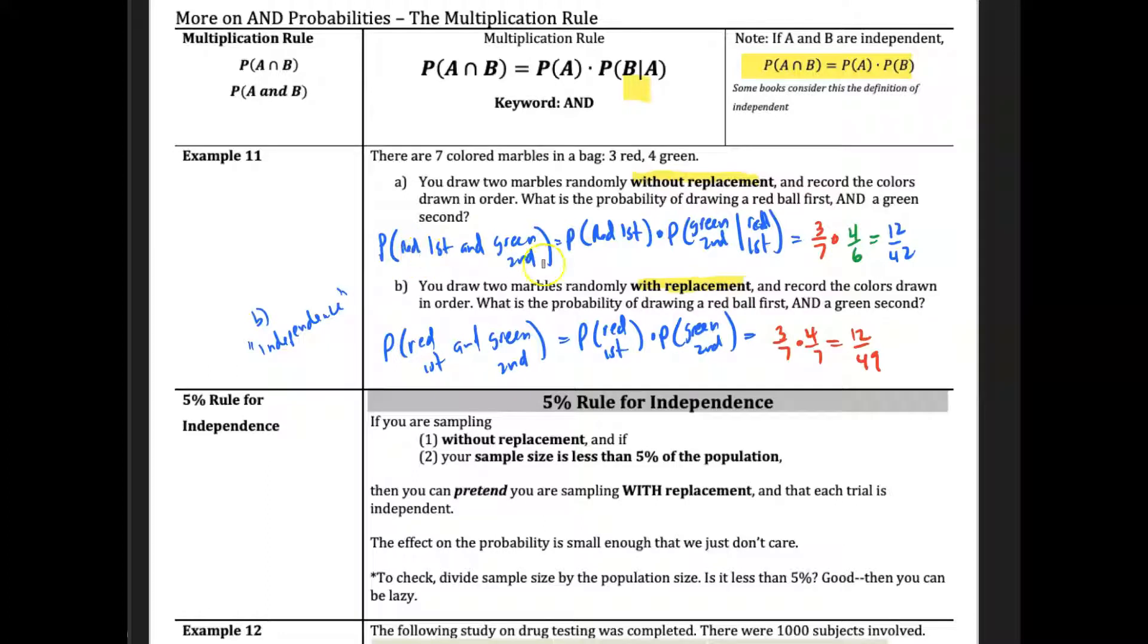And so the probability of picking red first and green second is equal to 3 sevenths times 4 sixths because 3 out of 7. And then after you pick one marble without replacement, we only have six marbles left. And four of those are green. And so it's 4 out of 6. And so you get 12 out of 42.